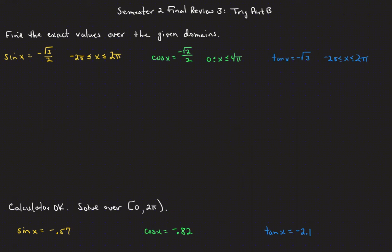Sine of x equals negative square root of 3 over 2. If we ignore the negative sign for a moment, we know the value in quadrant 1 where sine is positive square root of 3 over 2 is at pi over 3. That is our reference angle. Sine is negative in quadrants 3 and 4, so with a reference angle of pi over 3, we get the quadrant 3 angle as pi plus pi over 3, which is 4 pi over 3 — one angle in our domain between 0 and 2 pi.